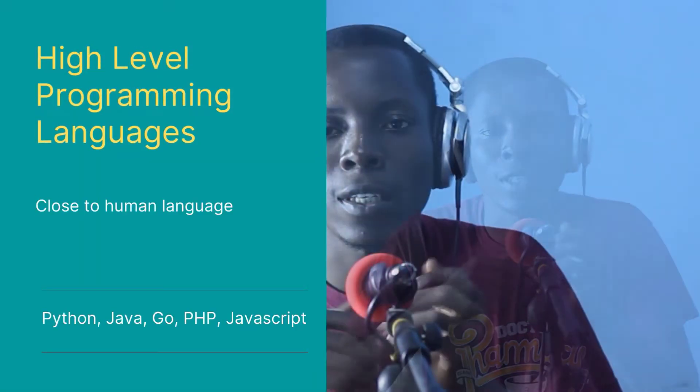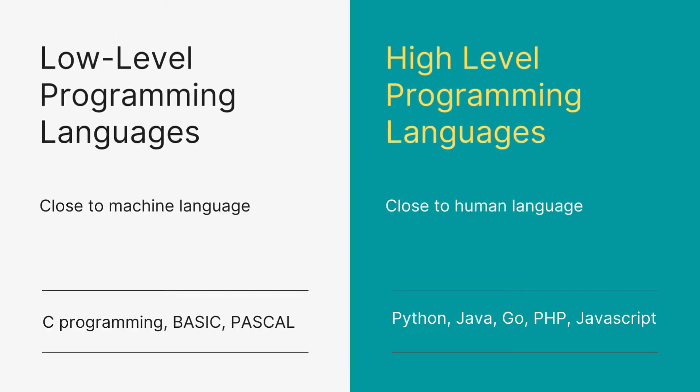Some languages sit in between and you may consider them middle-level programming languages. An example of a low-level programming language is C programming. A low-level programming language is so close to the computer's language that you, the human, find it difficult to understand. Whereas a high-level programming language is so close to your own language that it becomes easy for you to understand. Python is an example of a high-level programming language — it is so close to English that just by reading Python code, you may be able to tell what it is doing even if you have never programmed before.